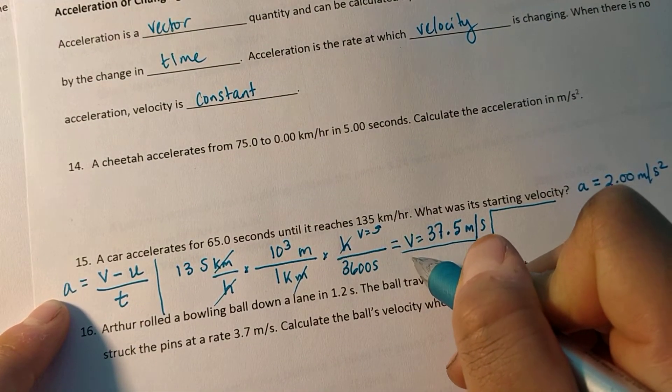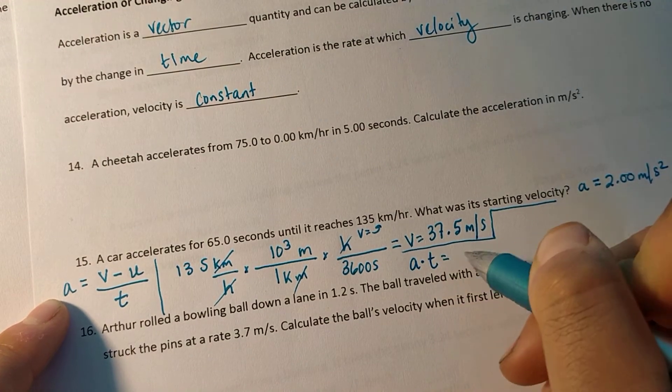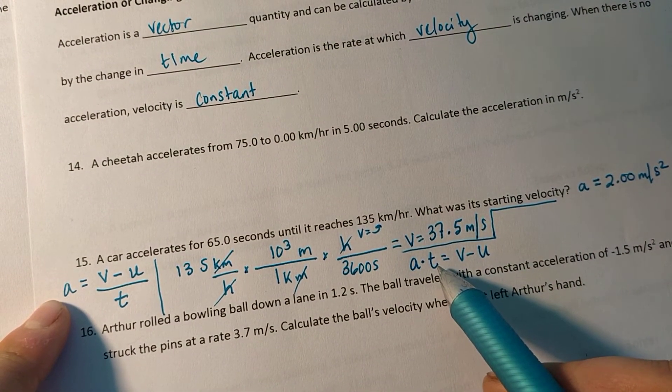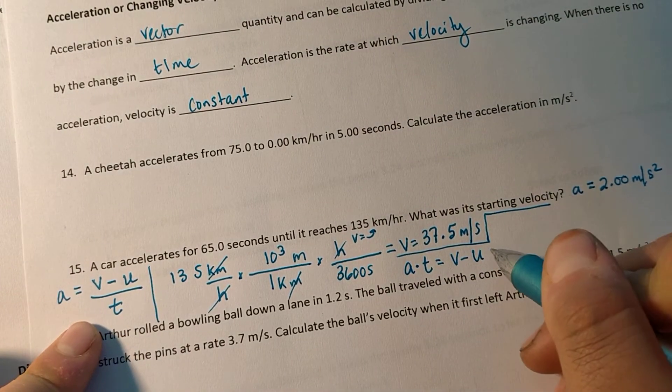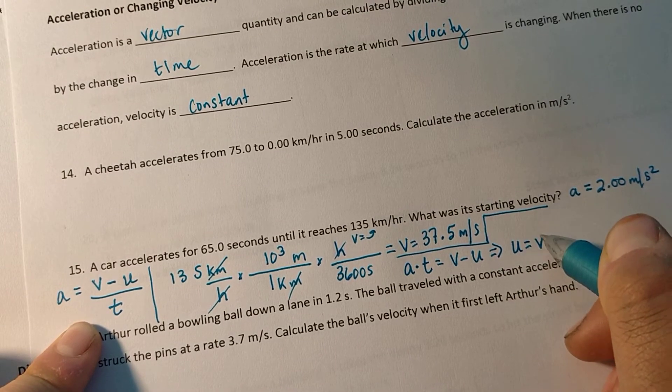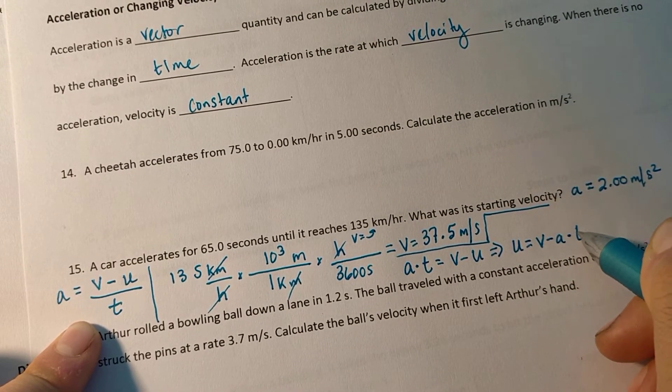I'll multiply this equation by t on both sides. So I get a times t equals v minus u. I'll add u to both sides. And then subtract a times t.